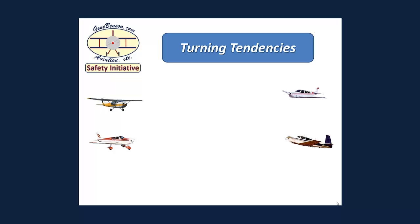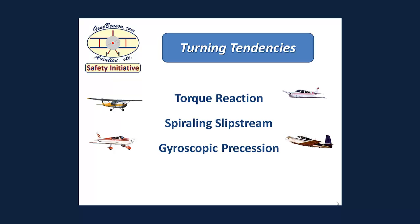There are four turning tendencies to discuss: torque reaction, spiraling slipstream, gyroscopic precession, and asymmetric propeller loading. Turning tendencies are often all grouped together and referred to as torque, but that is not technically correct. These are four individual tendencies, and we will look at each one separately.